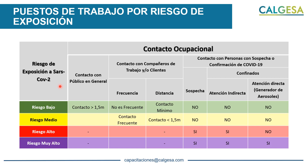El riesgo bajo es aquel puesto de trabajo en el que el contacto es mayor a metro y medio. Si estoy a más de metro y medio de mi compañero o del cliente, estoy en riesgo bajo. No hay frecuencia en el contacto, este es mínimo, no hay sospecha de que el compañero de trabajo tenga COVID, no hay atención indirecta y no hay generador de aerosol. En el riesgo medio, la distancia de contacto es menor a un metro y medio, el contacto es frecuente, no hay sospecha de COVID, hay atención indirecta y no hay generador de aerosoles.